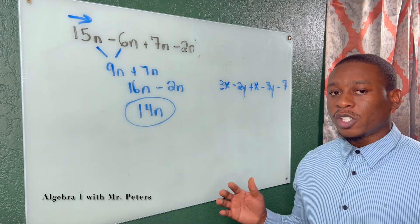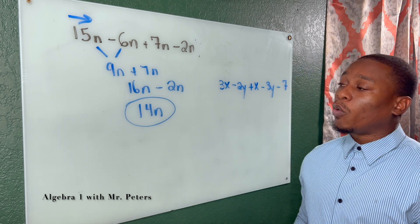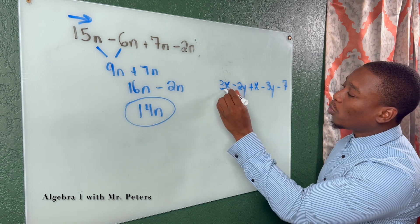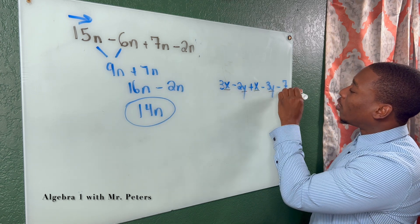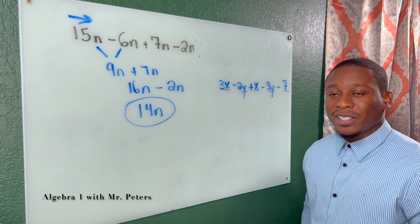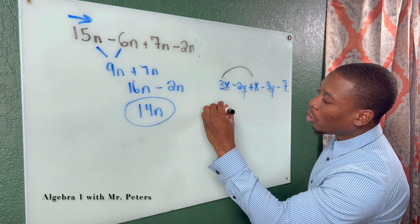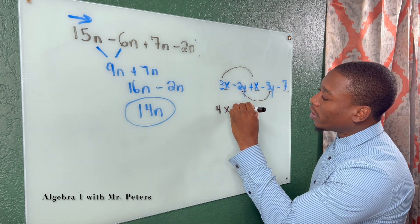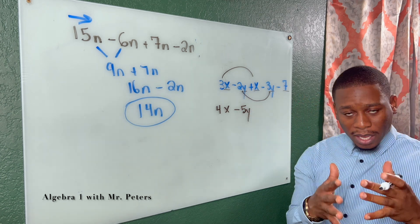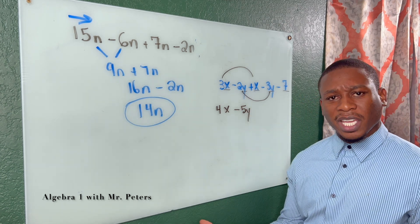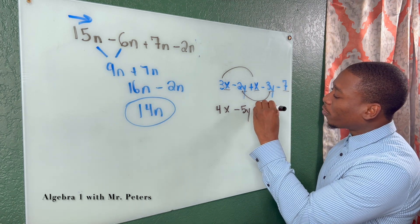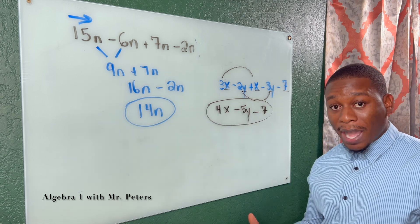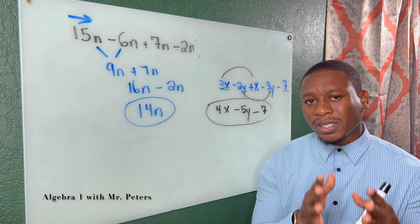When we talk about simplifying expressions, remember those two concepts. In problem number two, they try to confuse us by giving us more than one variable and a constant. When we're talking about like terms, we can only add 3x and x, which gives us 4x. Negative 2y and negative 3y give us negative 5y. Because negative 7 does not have a like term, it stays the same. Our answer is 4x minus 5y minus 7.